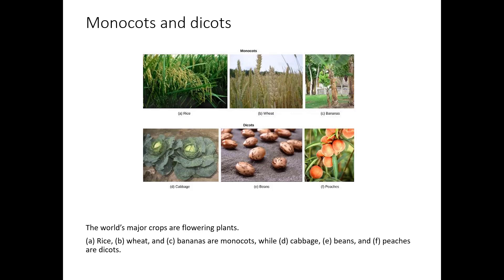All of your major food crops are flowering plants. There are two main groups of flowering plants: monocots and dicots. 'Cot' is short for cotyledon, which is the little embryo seed leaf. If there is only one seed leaf in the embryo, that's a monocot; if there are two, that's a dicot. Both monocots and dicots make up our food supply.